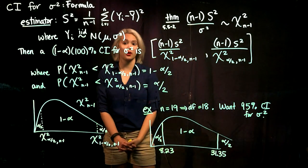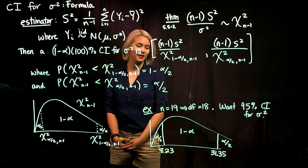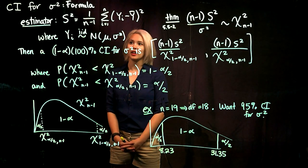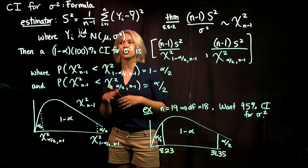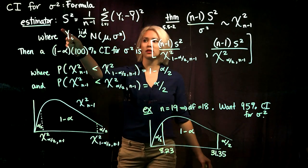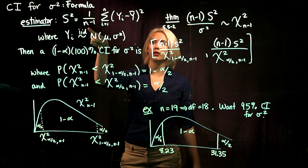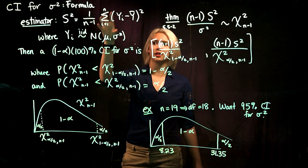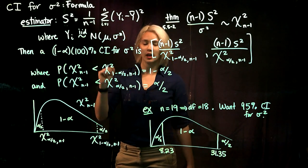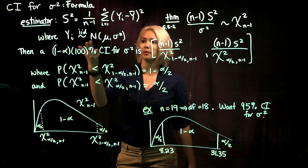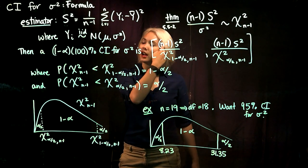In this video, we're going to talk about getting an interval estimate for our variance sigma squared. First we need to think about, before we get to interval estimation, what's our point estimator? Our point estimator is our sample standard deviation squared — that's 1 over n minus 1, summing up for all n the quantity yi minus y-bar squared. Our data are coming from a normal distribution with mean mu, variance sigma squared, and they're iid.